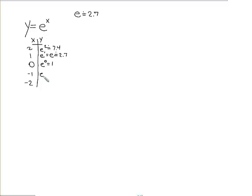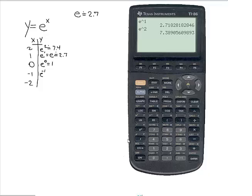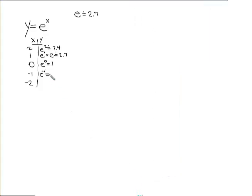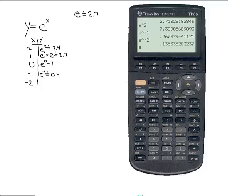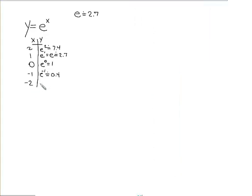This is going to give me E to the negative 1 power, which is 1 over E, or I can just do that on my calculator by doing second function LN raised to the negative 1 power, which gives me about 0.4 when I round it off. And then finally, E to the negative second power, second LN, negative 2 power.